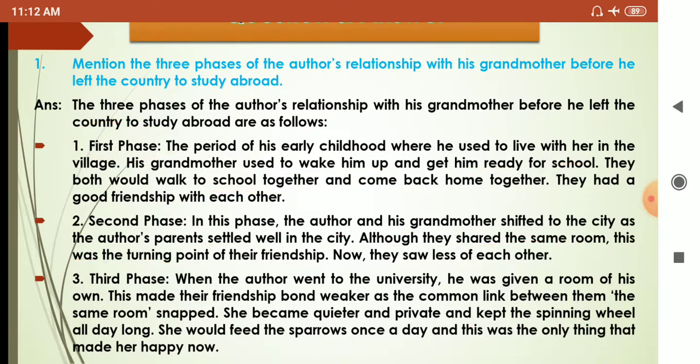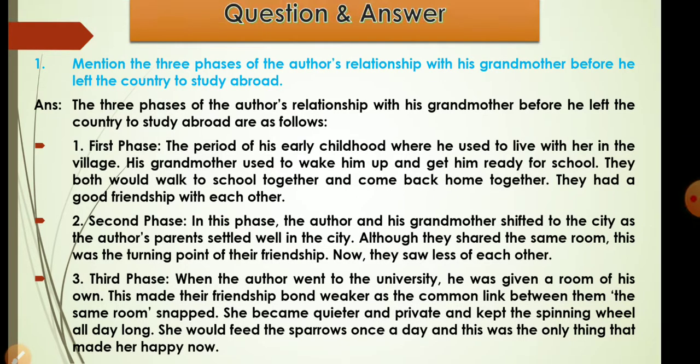The third stage: when the author went to university he was given a room of his own. This made the friendship bond weaker as the common link between them snapped. She became quieter and more private, and kept the spinning wheel all day long.